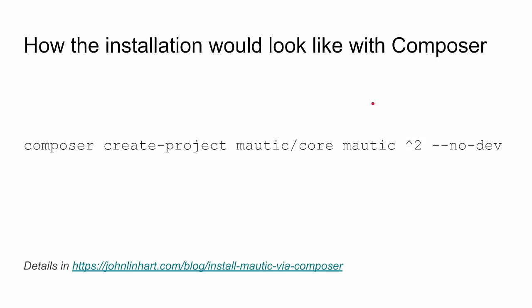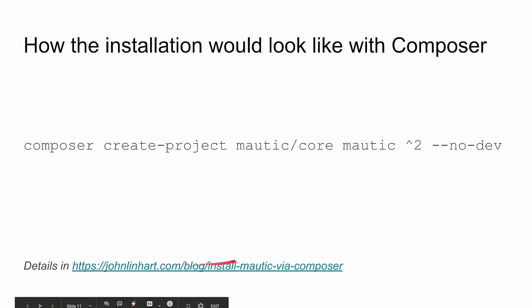There would be a var directory — already present in Motic 3 — with variable files, temporary files, cache, config, logs, and migrations. There would be a public directory, and only that directory would be accessible through the web, making it more secure because hackers wouldn't have access to the other directories. The installation would look like: run `composer create-project motic-core` and install it into a Motic directory — you can change the name. Don't install development packages for production. It's already working — you can try it.